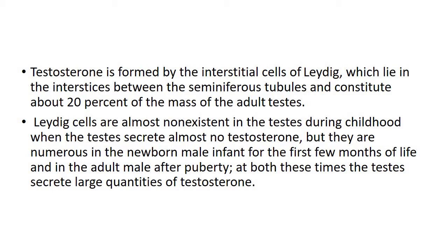We discussed the various phases of testosterone secretion in the last lecture. During childhood, no testosterone is produced. However, the cells are numerous in the newborn male infant for the first few months of life, and they are also numerous in the adult male after puberty. At both these times, the testis secretes large quantities of testosterone.